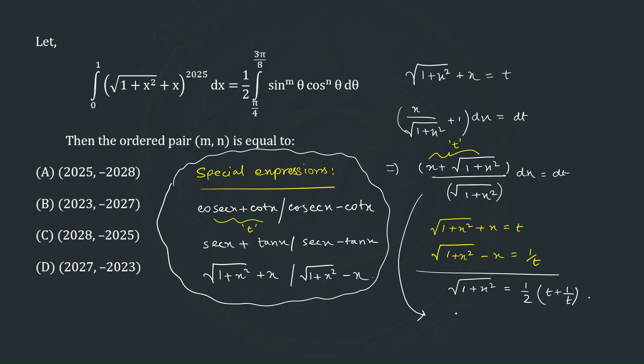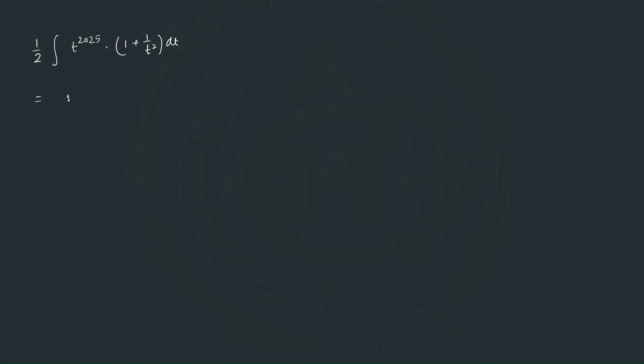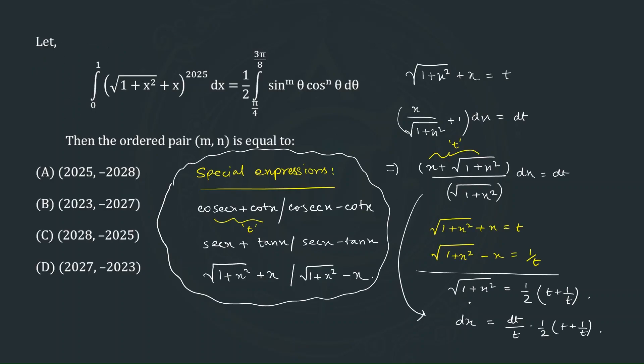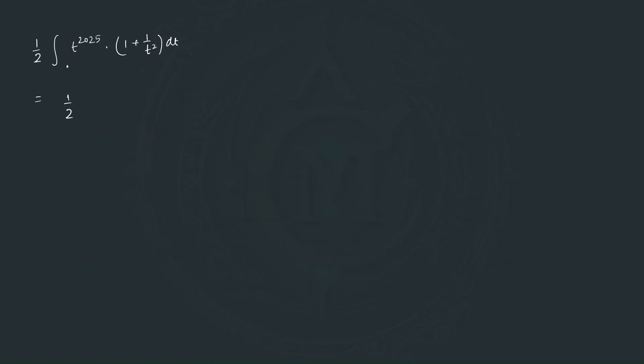From here, dx = dt / [t · (1/2)(t + 1/t)], which gives us dx = (1/2)(1 + 1/t²) dt. So we can write our given integral in variable t as: (1/2) times the integral from 1 to (√2 + 1) of [t^2025 + t^2023] dt, which factors as t^2023(1 + t²) dt.